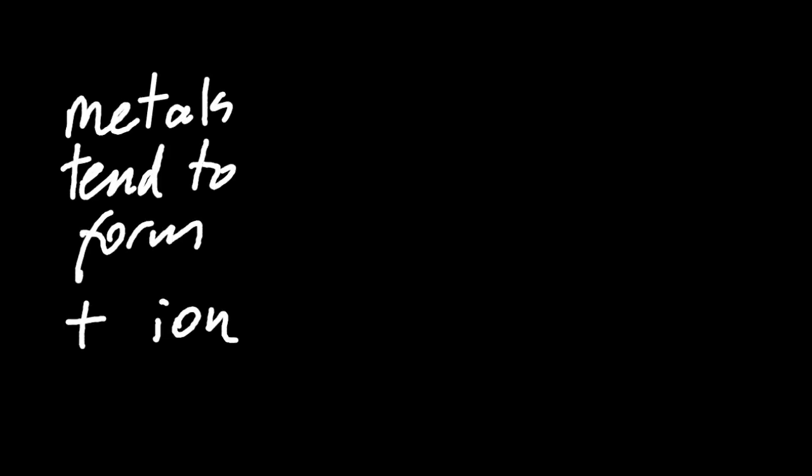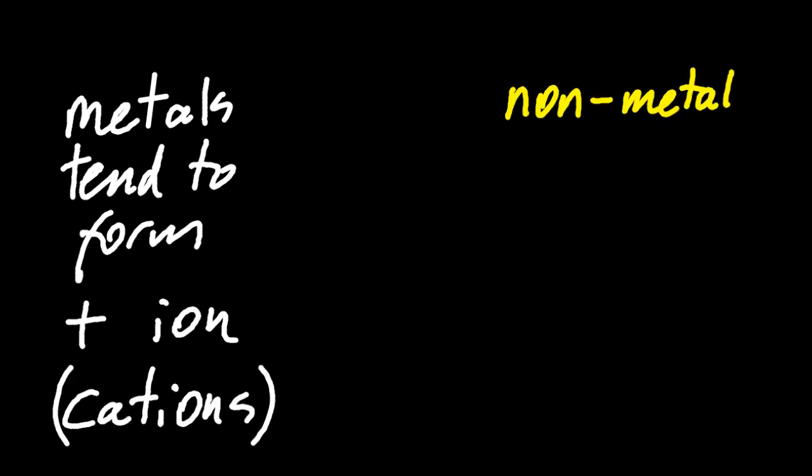Oppositely charged ions will attract each other, and that's called electrostatic attraction. And so they're going to try and move closer together and form a bond. And in general, metals tend to form positive ions, which are called cations, and non-metals tend to form negative ions, which are called anions. And we're done.